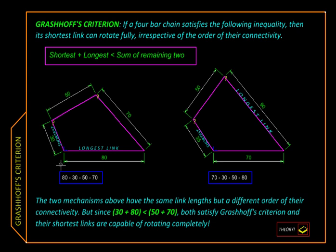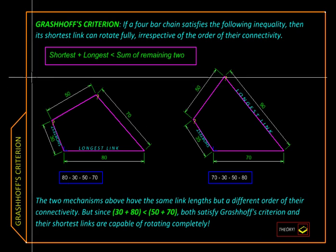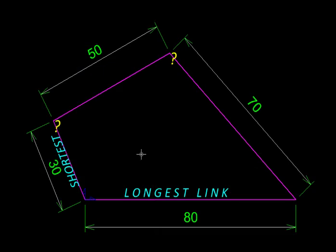Here is one such mechanism. Let us test it. So the shortest link and the longest link add up to 30 plus 80, equal to 110, and the other two links, 50 plus 70, add up to 120.